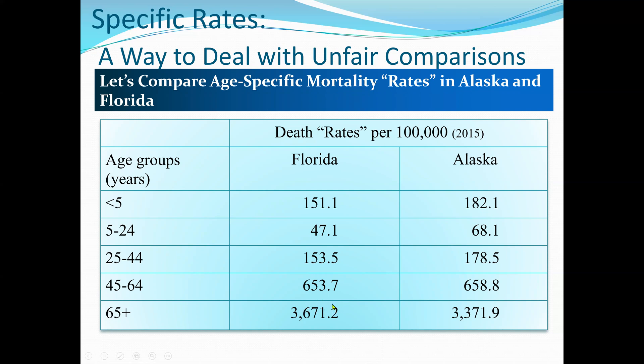In this lecture we covered crude rates, specific rates, and now adjusted rates. Age-adjusted rates account for age differences between populations. The example uses age, but adjustment can be done for gender, sex, and other attributes. Revisiting our crude rates: we had all deaths without considering age differences, giving Florida a crude rate of 946 and Alaska 585 per 100,000 population.